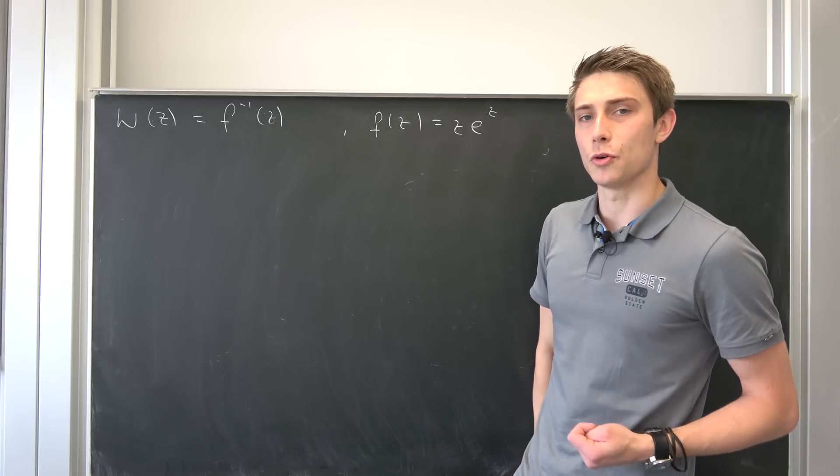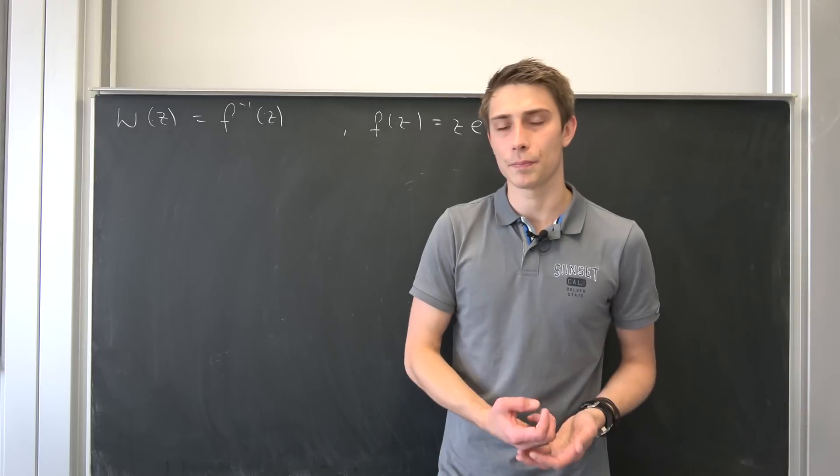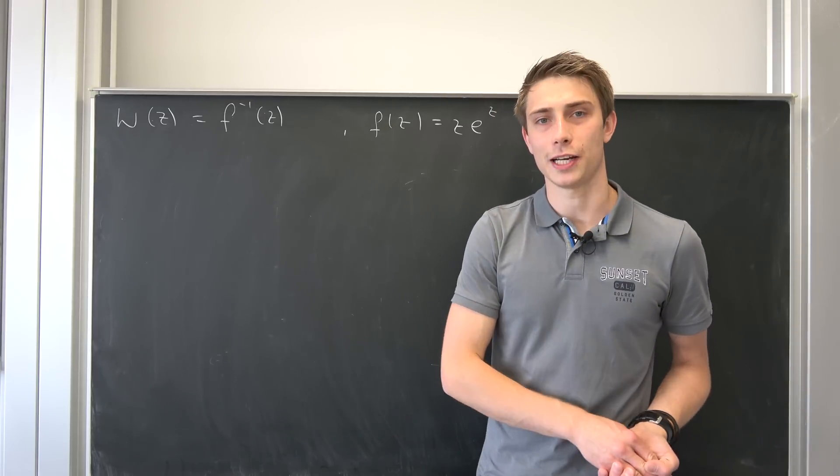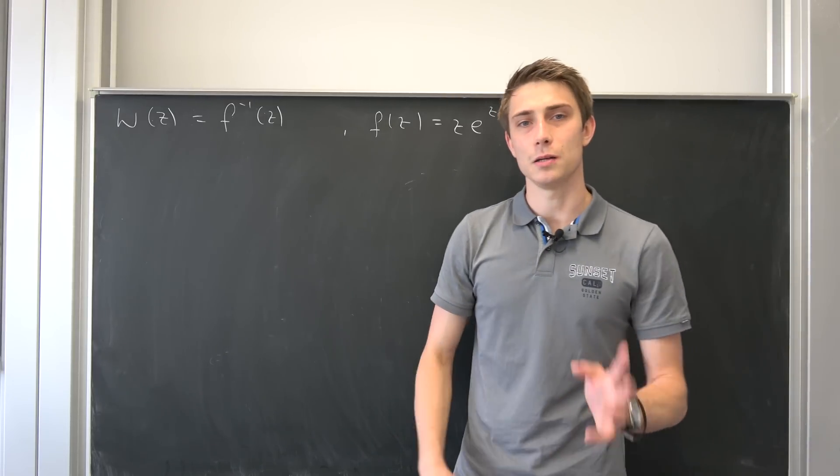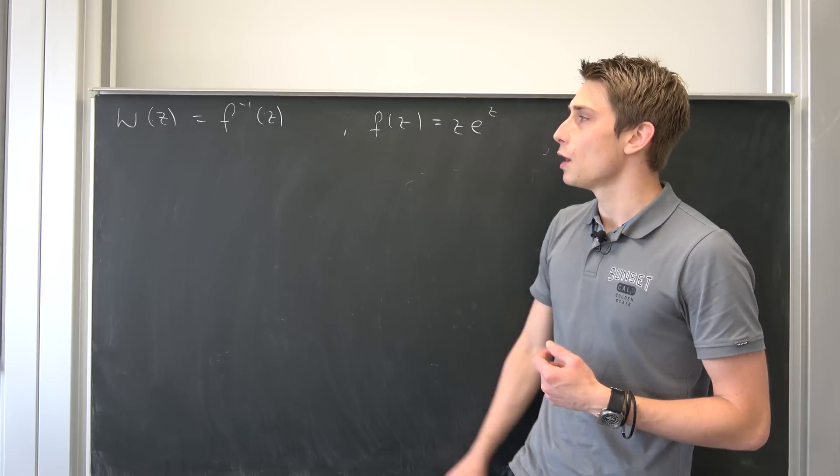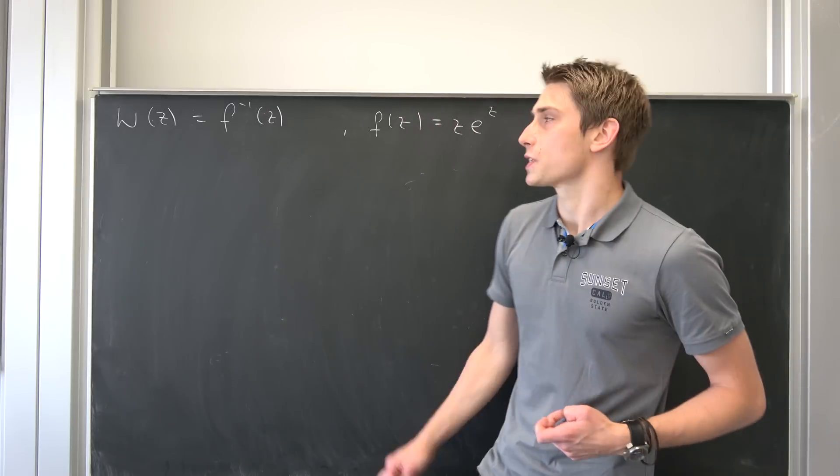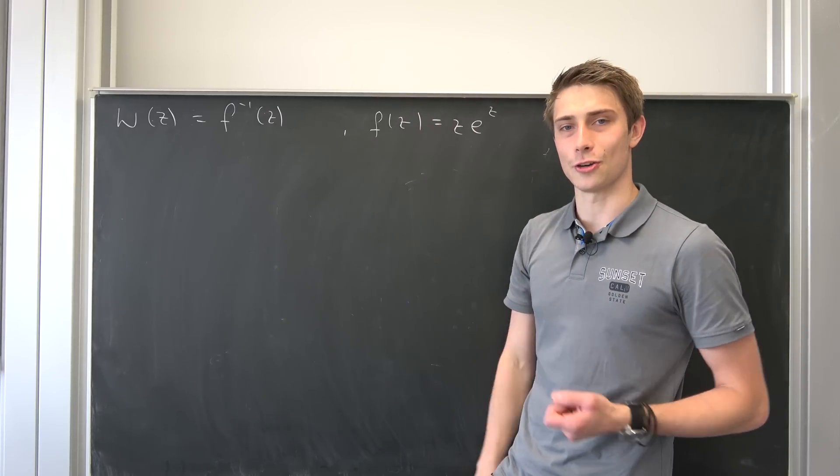I would like to derive the derivative today. But how would you go on with something like this? Well, the best way is to consider implicit differentiation. For this purpose I would like to plug this Lambert W of z into this function.